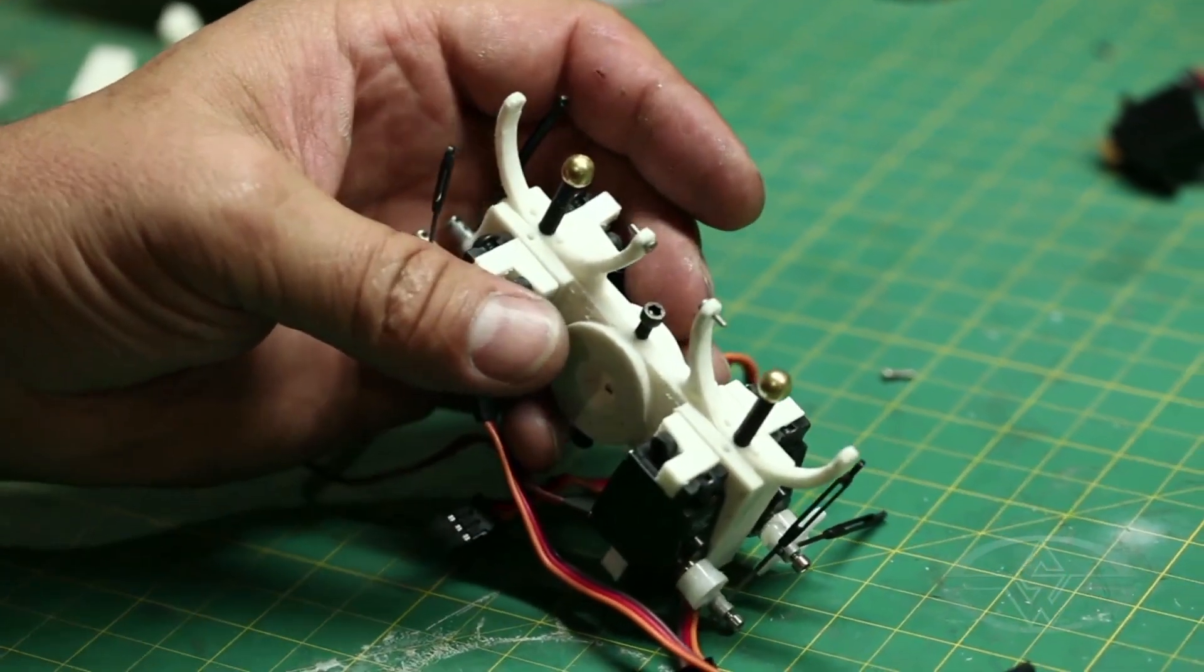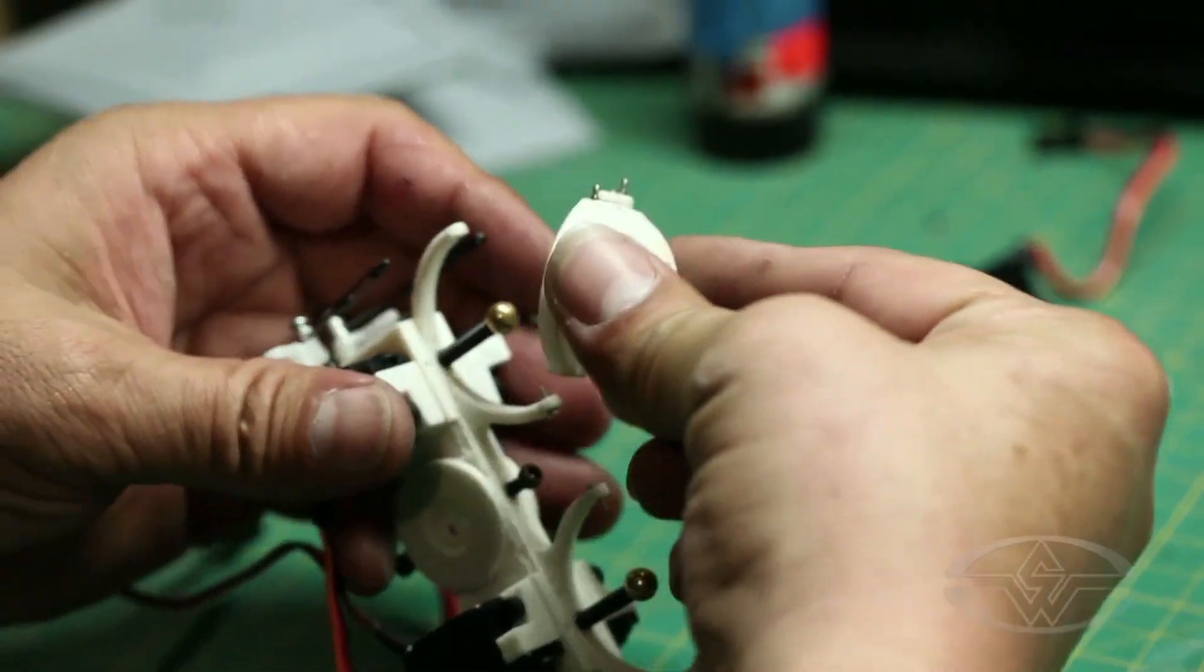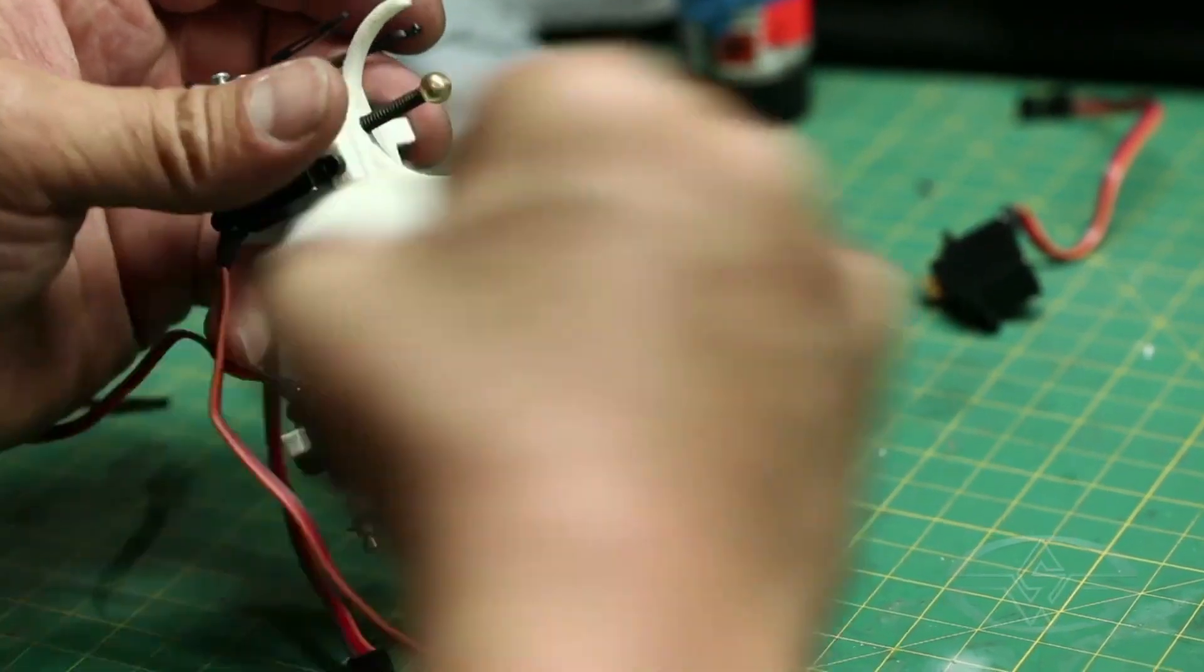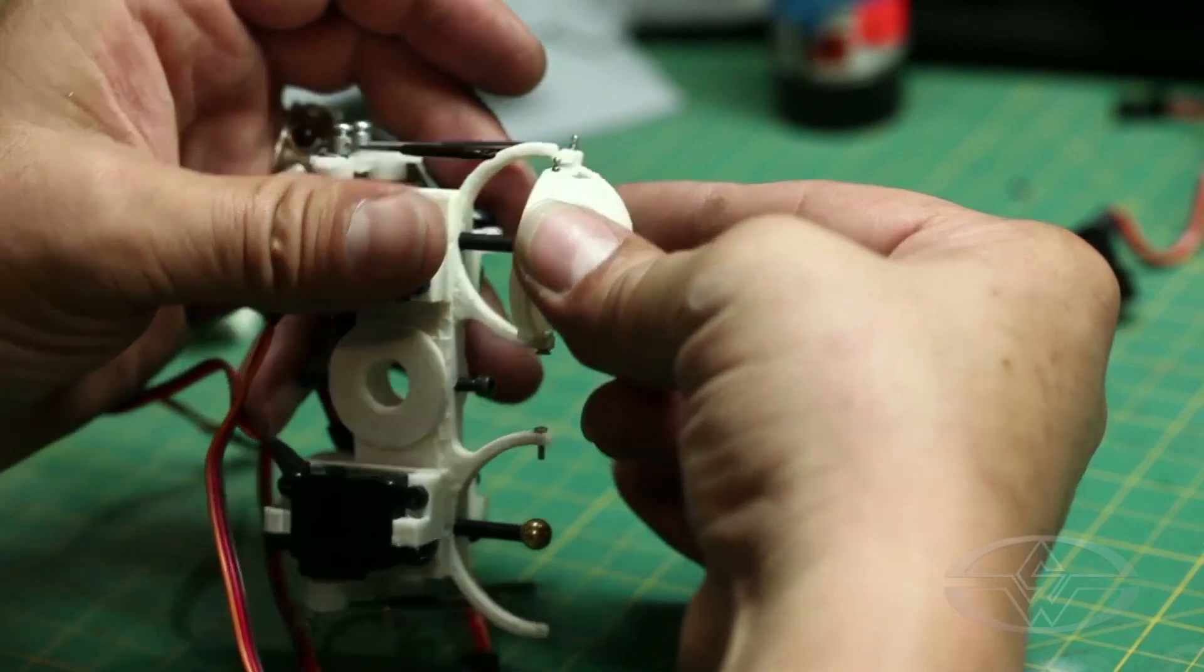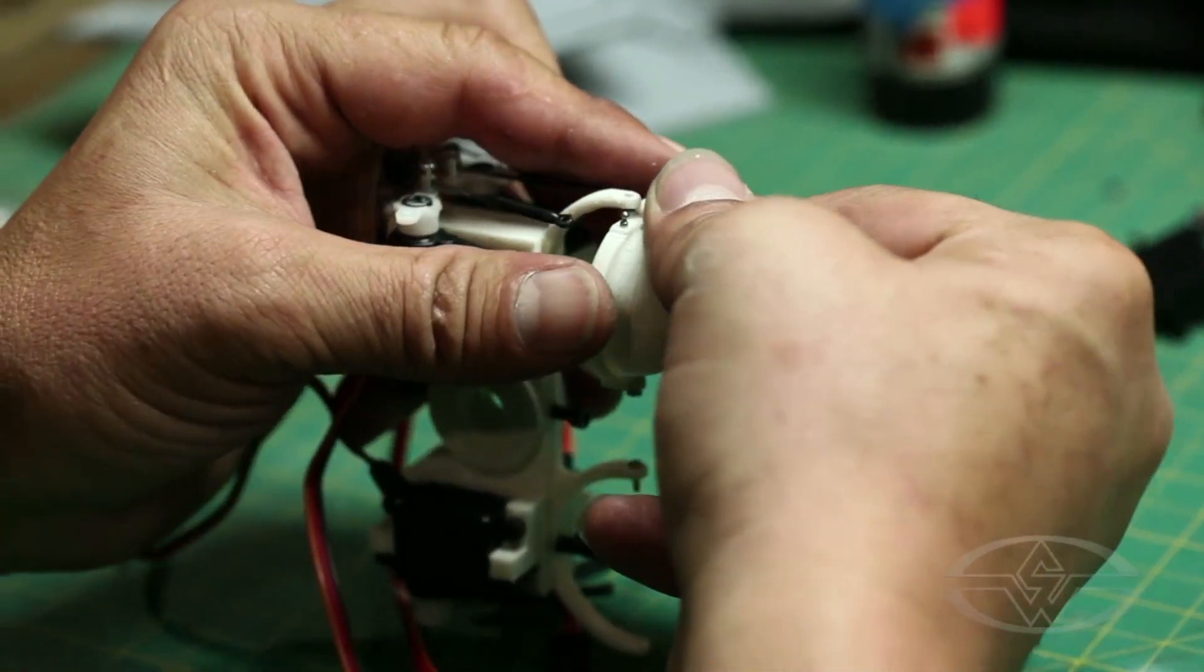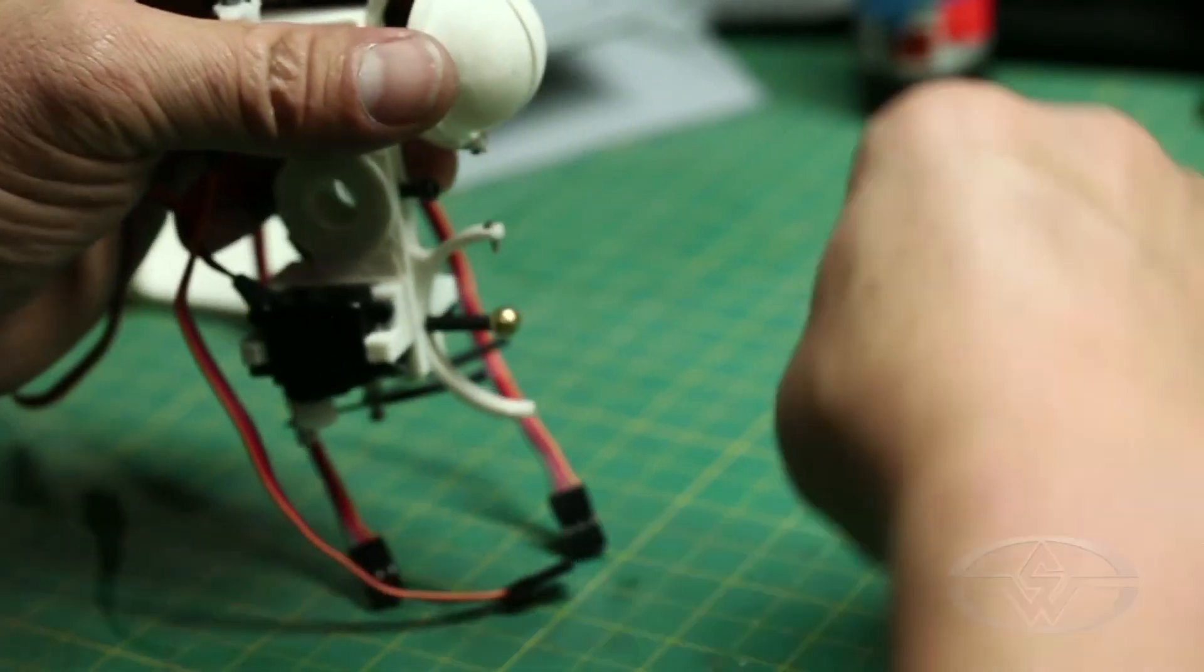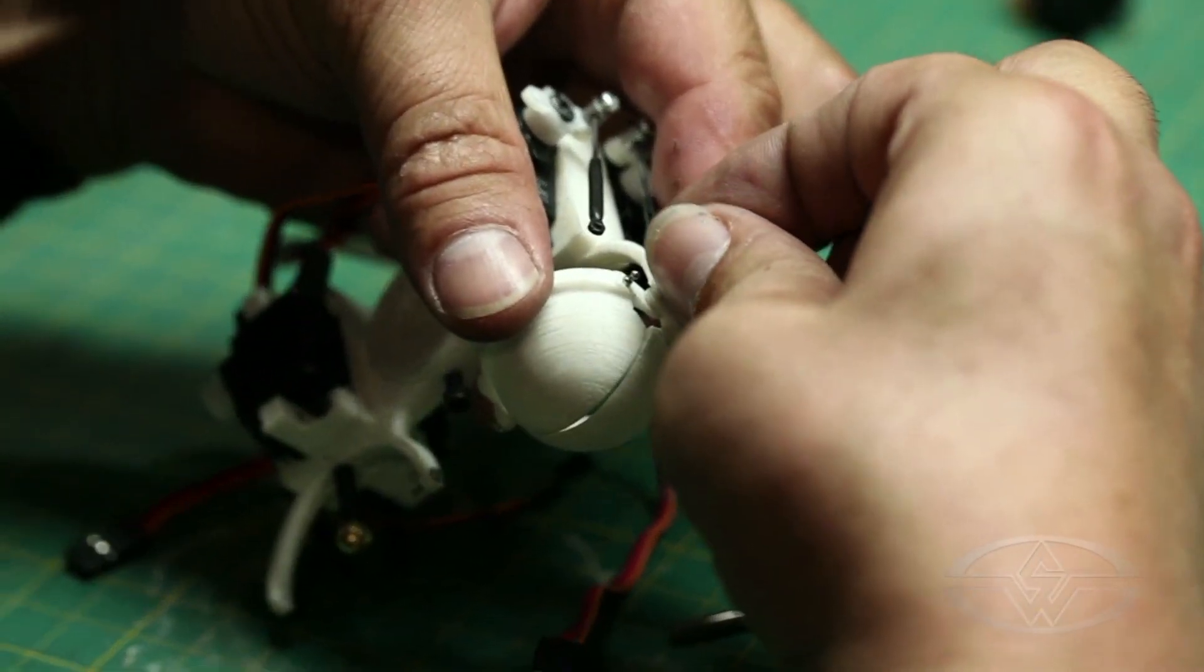So now that we have the servos in place we can go ahead and mount our eyelids. Basically we start by putting the inner screw and we drop them both into that screw. And then while it's in place we go ahead and put the outer screw in there.